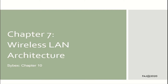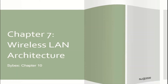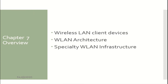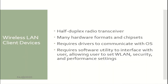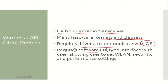Chapter 7: Wireless LAN Architecture. In this chapter you will learn about Wireless LAN Client Devices. A client device is a half-duplex radio transceiver which can exist in many hardware formats and chipsets. It requires drivers to communicate with the operating system, as well as a software utility to interface with the end user, allowing the user to set wireless LAN security and performance settings.